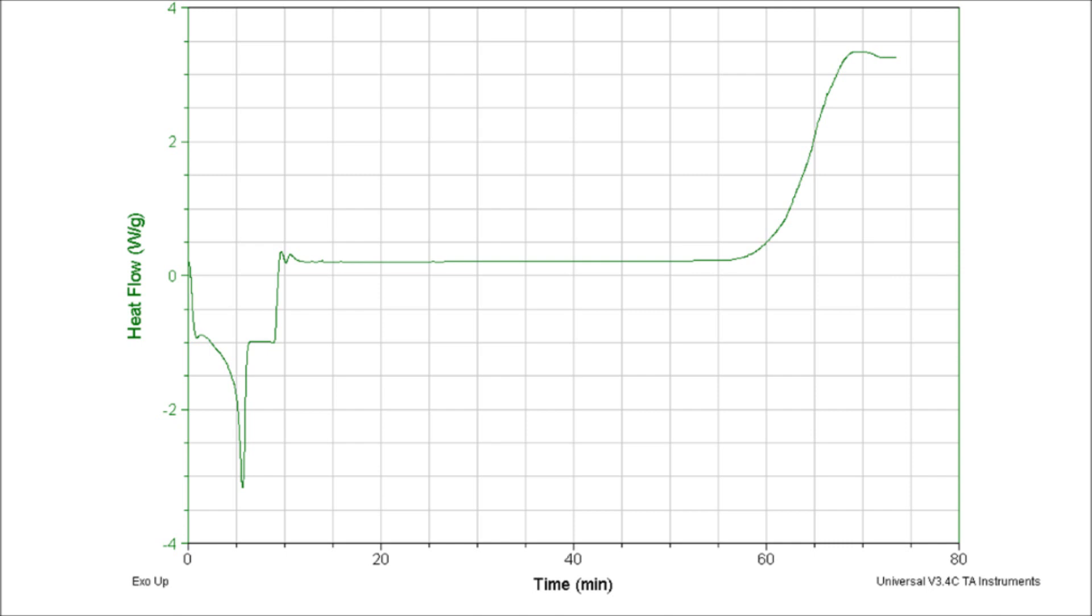Fast forward about an hour to the conclusion of the standard OIT test we were running. Here is the curve produced by the DSC software. As you can see, it very closely resembles that of the OIT reference curves we saw earlier. We know the T sub 0 is 13.93 minutes, but we must now determine the T onset point, as both values are needed to calculate the OIT.